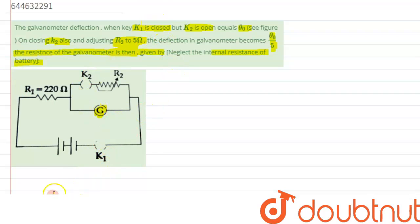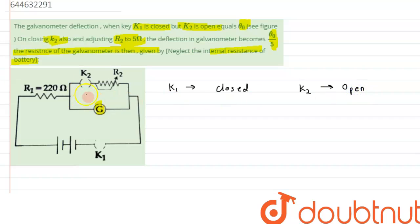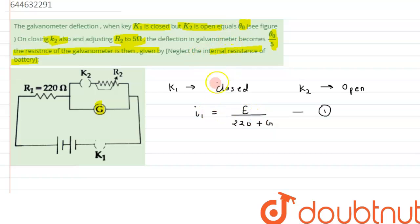We can divide the question into two parts. First is when k1 is closed and k2 is open. When k2 is open, the current will flow only through the galvanometer. Let's suppose that current to be I1, so I1 can be written by Ohm's law as E upon total resistance, that is 220 plus G. This is equation one. Since the deflection is theta naught, we write I1 as theta naught, because for a galvanometer the current is directly proportional to the angle of deflection.